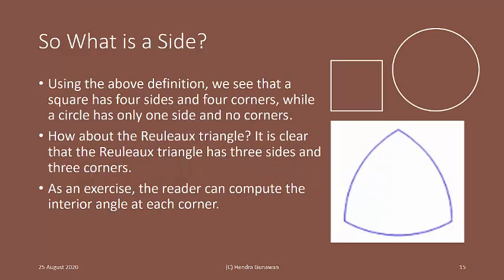Using the above definition, we see that a square has four sides and four corners, while a circle has only one side and no corners. How about the Reuleaux triangle? It is clear that the Reuleaux triangle has three sides and three corners. As an exercise, the reader can compute the interior angle at each corner.